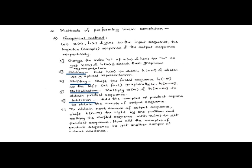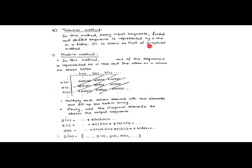All the product sequences, when added together, result in a sample of the output sequence. These operations are performed iteratively until we get the complete output sequence y of n. The tabular method is similar to the graphical method, where we arrange the input sequence and folded and shifted sequences in a table form instead of graphical representation, and obtain the convolution sum by following the analytical formula.